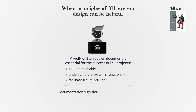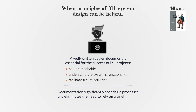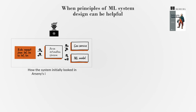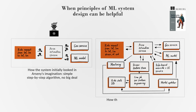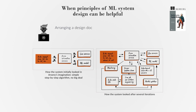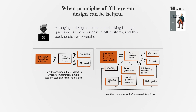A well-written design document is essential for the success of ML projects, as it helps set priorities, understand the system's functionality, and facilitate future activities. Documentation significantly speeds up processes and eliminates the need to rely on a single expert. One of the authors shares a story of a failed project due to missed aspects and a successful integration of a startup into a larger corporation, facilitated by a well-built design document. In conclusion, arranging a design document and asking the right questions is key to success in ML systems, and this book dedicates several chapters to this crucial stage.